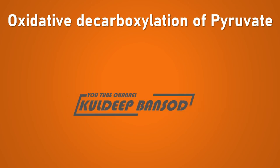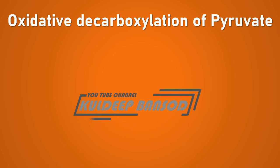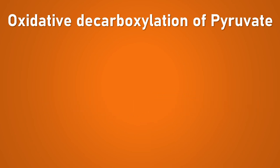Hello, in the previous video we saw the tricks to remember the various stages and intermediates of glycolysis. The link for the previous video is given in the description box. Under aerobic conditions, glucose converts to pyruvate, and now pyruvate is converted into acetyl-CoA.